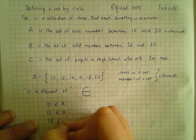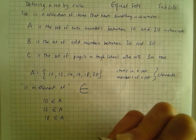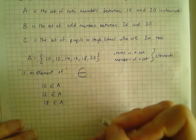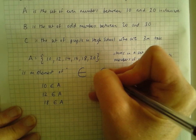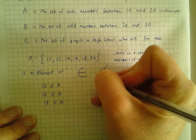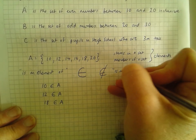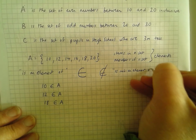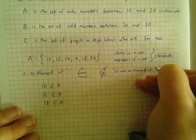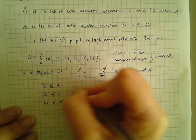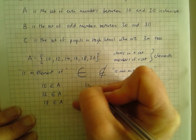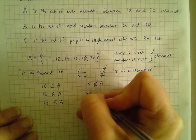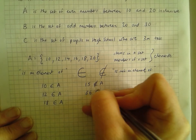If I want to say that something is not an element of a set, I use that same symbol but with a line through it — 'is not an element of'. So something like 15 is not an element of A, or 36 is not an element of A.